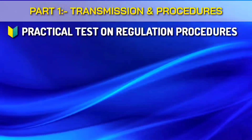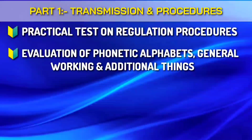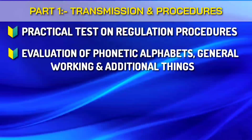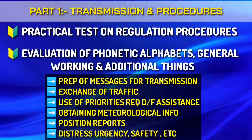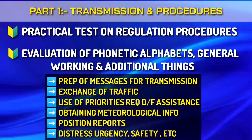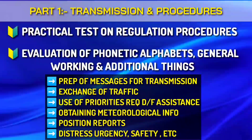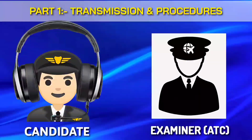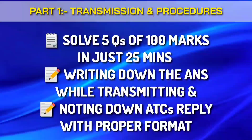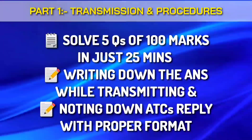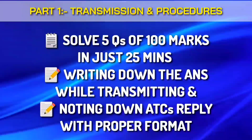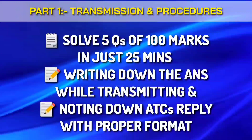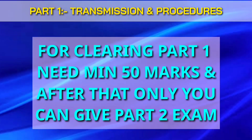In Part 1 — Transmission and Procedures — a practical test is conducted on regulation procedures. The exam evaluates your knowledge on the phonetic alphabet and general radio telephone working procedures. The candidate must be able to carry out preparation for transmission, exchange of traffic, use of priorities, requesting DF assistance, obtaining meteorological information, position reports, distress, urgency, and more. You will be provided a headset and the examiner will act as ATC. You need to solve 5 questions worth 100 marks in just 25 minutes — writing down answers while transmitting and noting the ATC's reply in proper format. It is a real multitasking examination. To clear Part 1, you need more than 50 marks, after which only you can apply for Part 2.